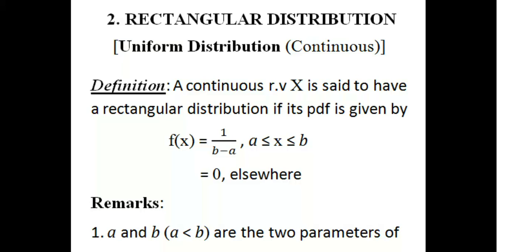Now let's discuss the distributions, that is continuous random variables following distributions. In the first class, we will discuss the detail items — properties and moments, meaning, variance, and properties. Next is the continuous random variable following distributions: it is a rectangular distribution, it is a uniform distribution. The uniform distribution is also a rectangular distribution. So let's start the definition.